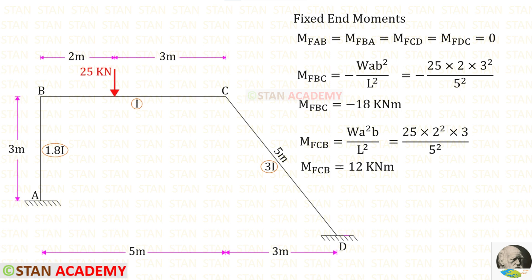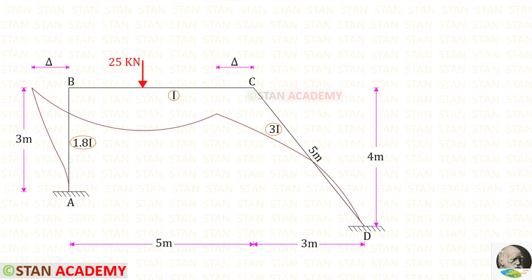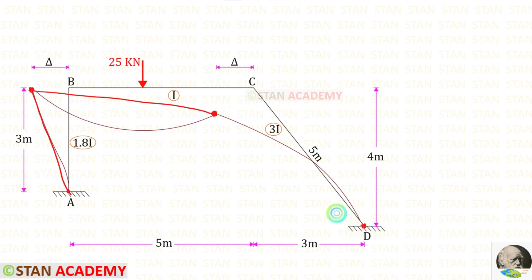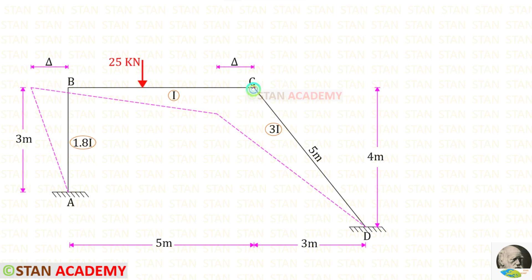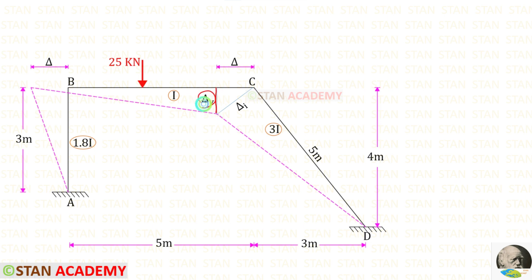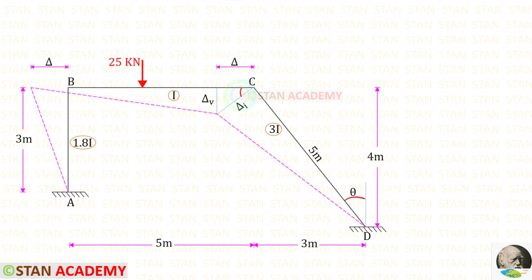Now let us see how this frame deforms due to the sway. We have assumed that the sway occurs towards the left side. Let us connect the relevant points and make a vertical line so that we get a triangle. In the triangle, let us keep the vertical height as delta V, the inclined distance as delta I, and the horizontal distance as delta. We have to find delta V and delta I in terms of delta. This angle and this angle will be the same. So if this angle is theta, this angle also will be theta.